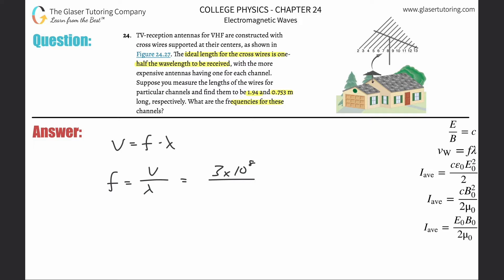Now you've got to be careful. The length here of the antenna is 1.94 meters—let's say we're going to choose that one to work with. But it says the ideal length of the cross wires is half of the wavelength to be received. So if this is the actual length of the cross wire, then the actual wavelength is twice that amount.